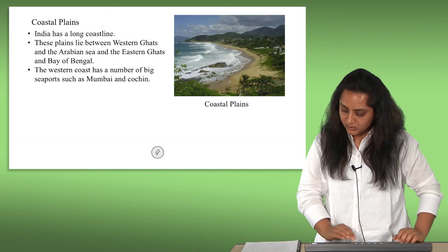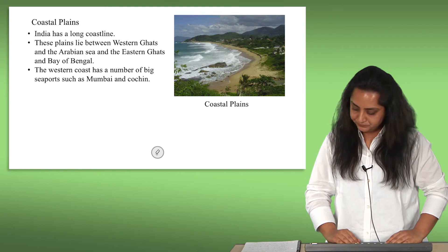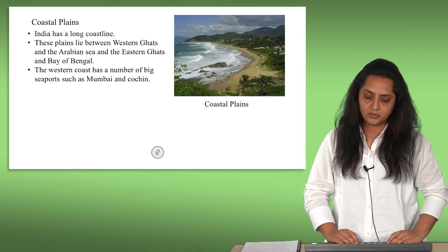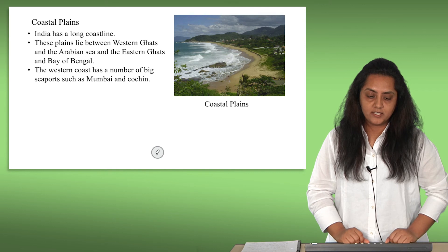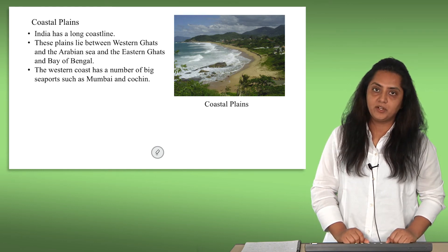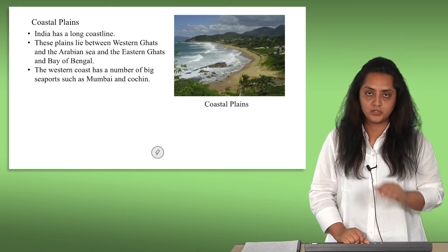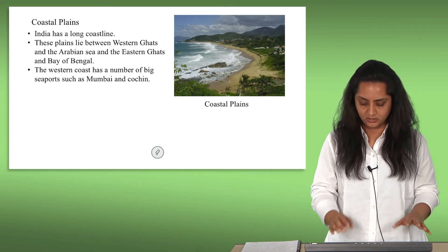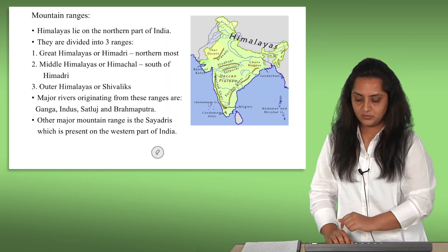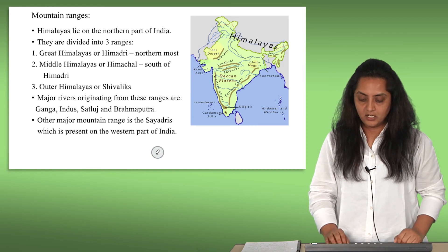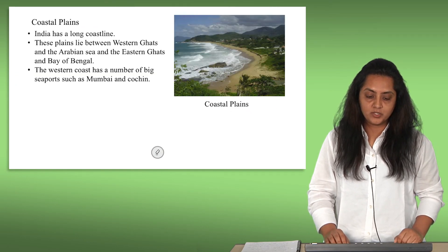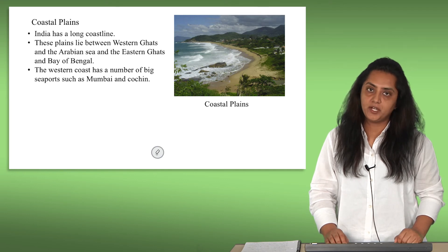Let's talk about the coastal plains. India has a long coastline. These plains lie between the Western Ghats and the Arabian Sea, and the Eastern Ghats and the Bay of Bengal. The west coast has a number of big seaports such as Mumbai and Cochin.